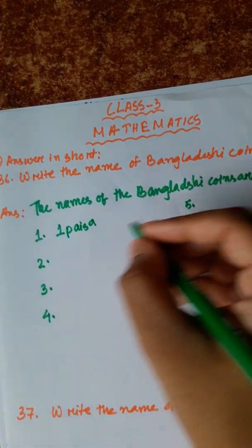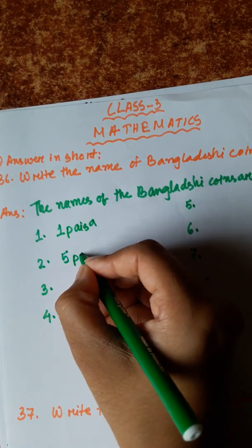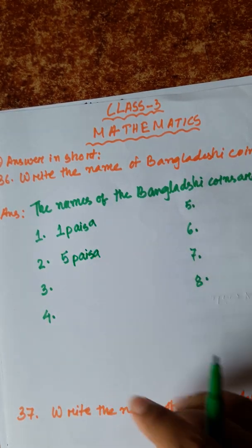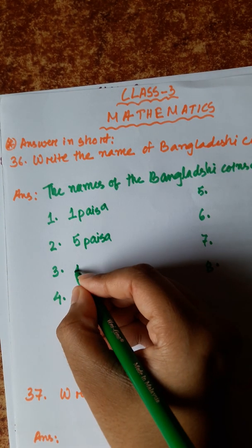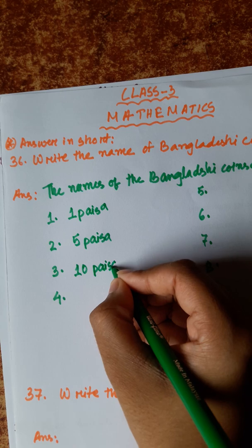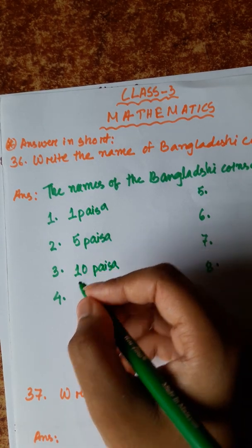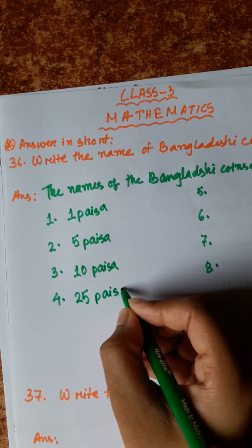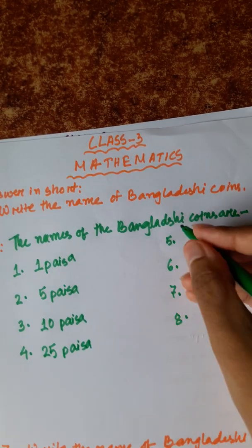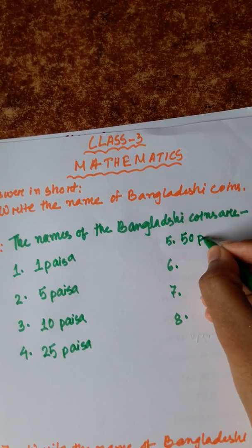then 5 Paisa. Number 3. 10 Paisa. Number 4. 25 Paisa. Number 5.